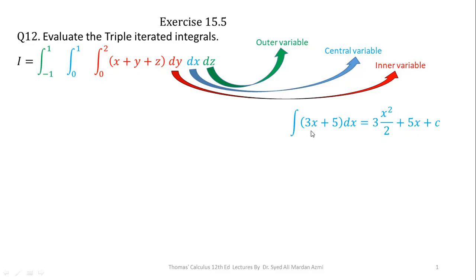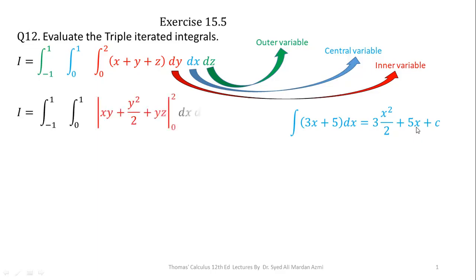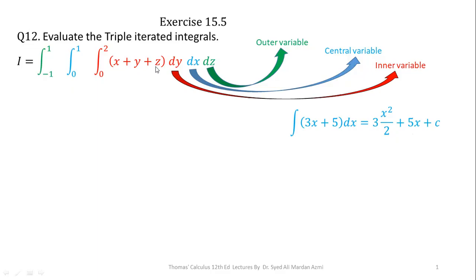We are dealing with both constants differently. If a constant term is being multiplied with a variable, it remains and you apply the rule of integration on the variable term. But if the constant term is being added or subtracted, you write the integration as 5x, associating the variable with respect to which you are integrating. So in this process of multivariable calculus, when you are dealing with respect to one variable, the other variables behave like constants. In this function, x and z will behave like constants and y is our variable.